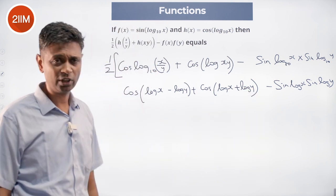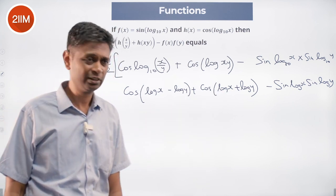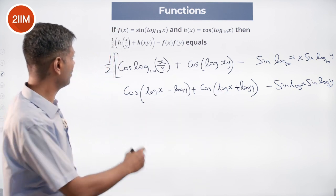cos(a - b) is cos a cos b plus sin a sin b; cos(a + b) is cos a cos b minus sin a sin b. The half sitting out here...